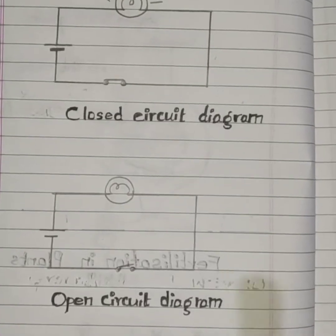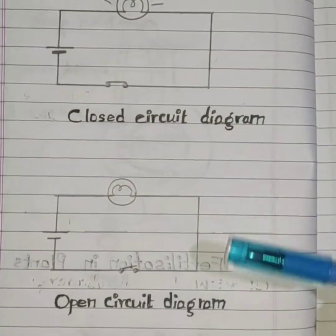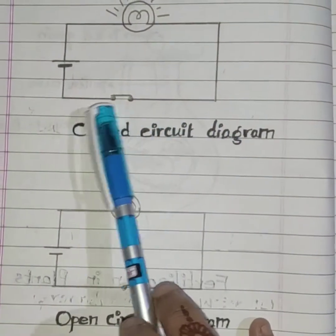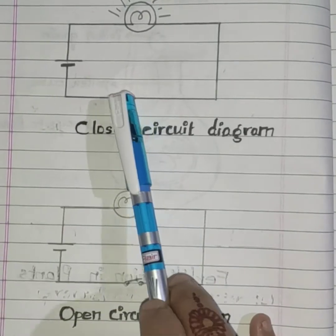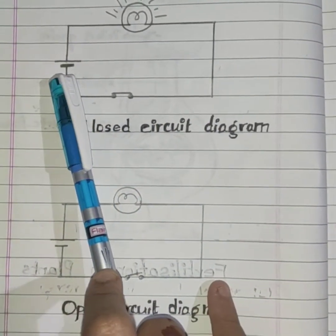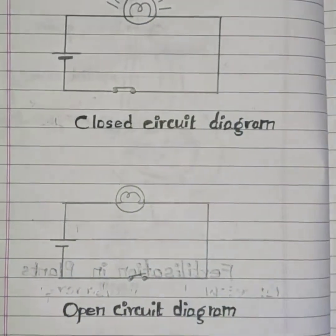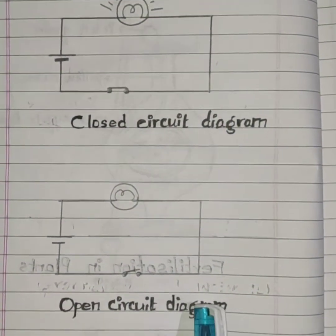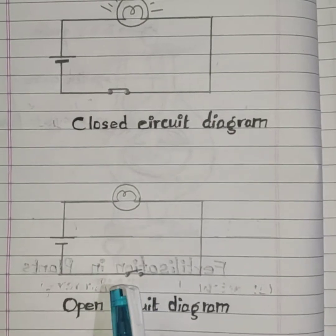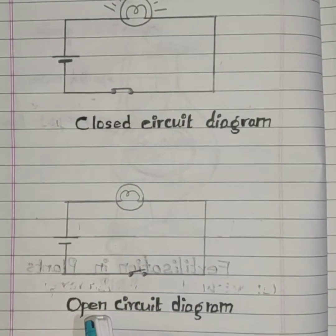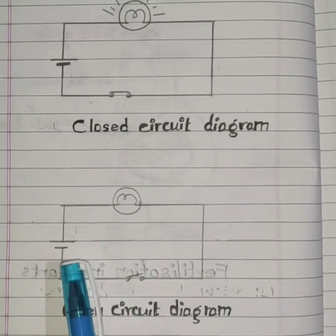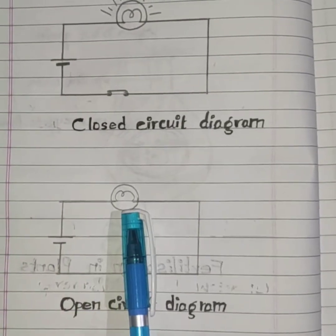Now, come to the next diagrams. First one is a closed circuit diagram and this is an open circuit diagram. You can see this is a switch — it is a closed one — and these are the wires, this is a cell, and this is a glowing bulb. In the open circuit, you can see the switch is in an off position, so it is an open circuit diagram. These are the wires, this is a cell, and this is a bulb.